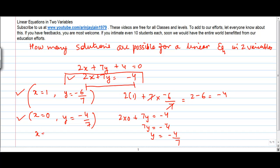Similarly, if I put x is equal to 2, then what I notice is 2 times 2 plus 7y is equal to minus 4. Now, this is 4; if I take it to the other side, it becomes minus, so 7y is equal to minus 8, or y is equal to minus 8 by 7.